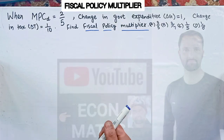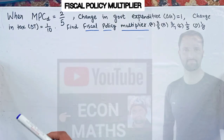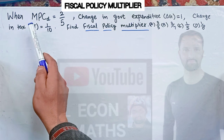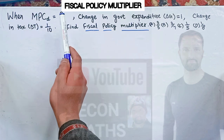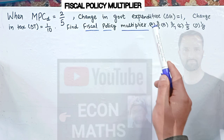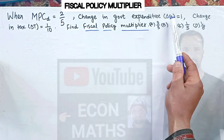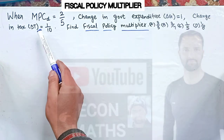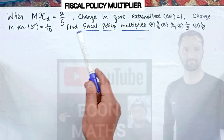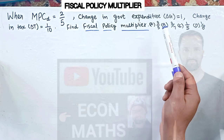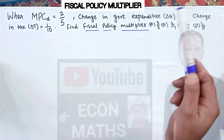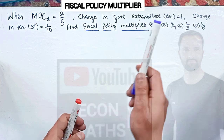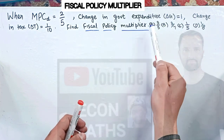In this video we will try to solve a problem on a fiscal policy multiplier. The question is: when marginal propensity to consume of disposable income is given as 2/5, change in government expenditure (ΔG) is 1, change in tax rate is 1/10, find the fiscal policy multiplier. The options are 3/5, 3/7, 1/5, or 1/8.